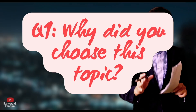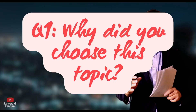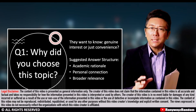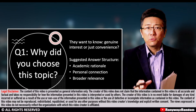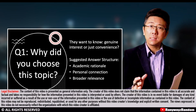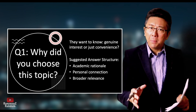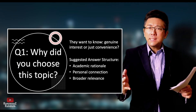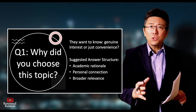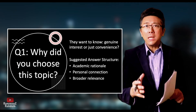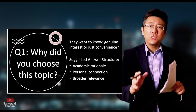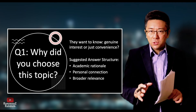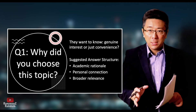Question number one: why did you choose this topic? This is a very common question. Maybe you don't get it exactly how it is worded here — they might phrase it differently, like 'what led you to this research topic?' or 'why did you focus your investigation on this issue?' But they're essentially asking the same thing: are you genuinely invested, or was this just convenient? The best way to answer this question is to mention three things.